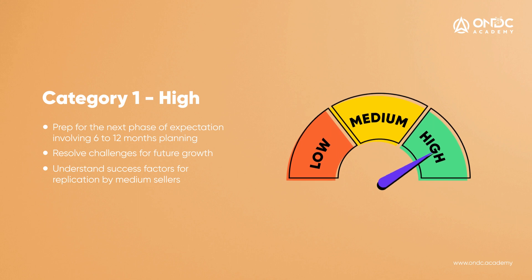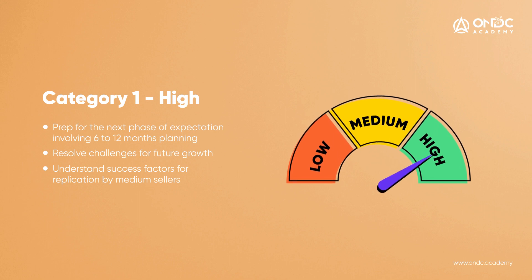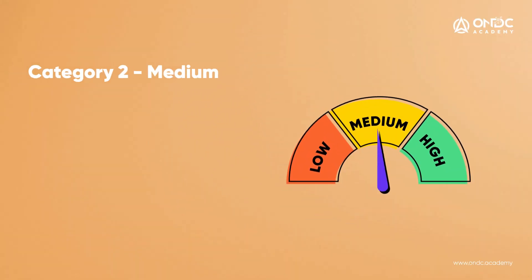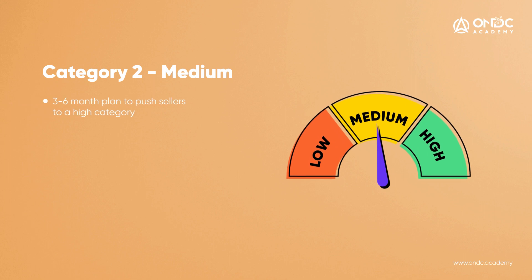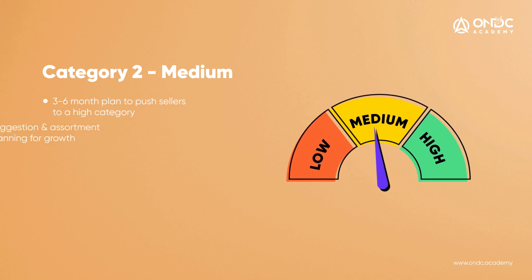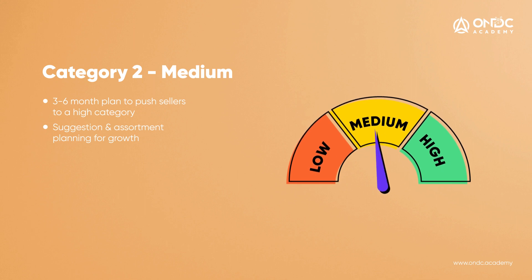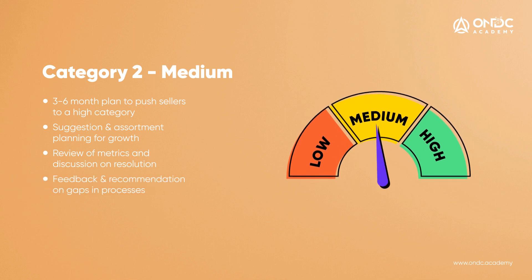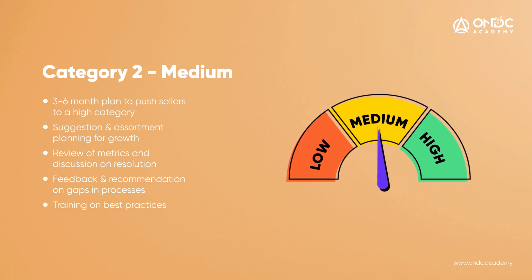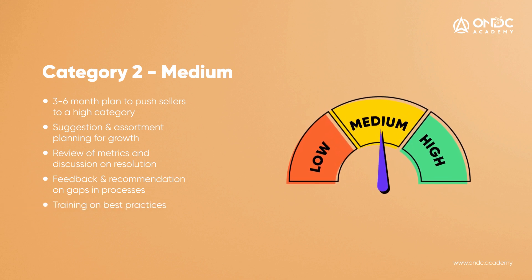Those success factors can be replicated with medium-classified sellers. For Category 2 — Medium — the key objectives involve a 3 to 6 month plan to take sellers to the high category, discussing assortment planning for growth, reviewing metrics, discussing resolutions, and giving feedback and recommendations for plugging gaps in various processes.